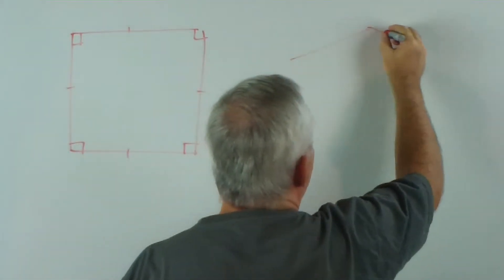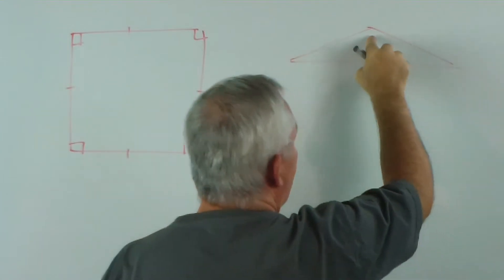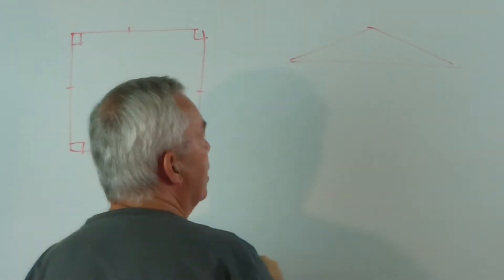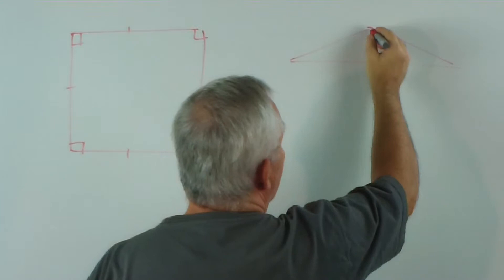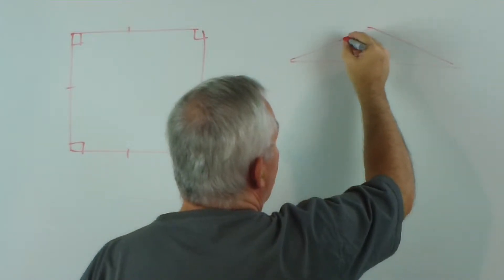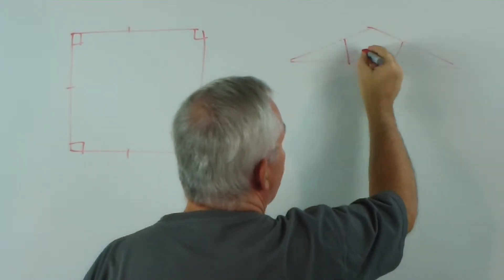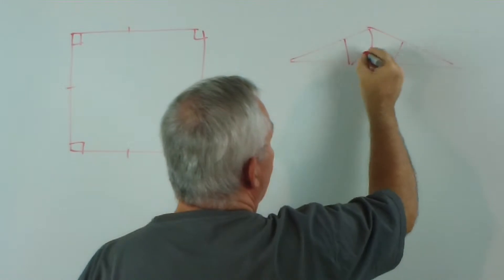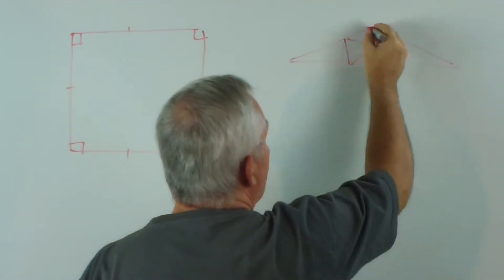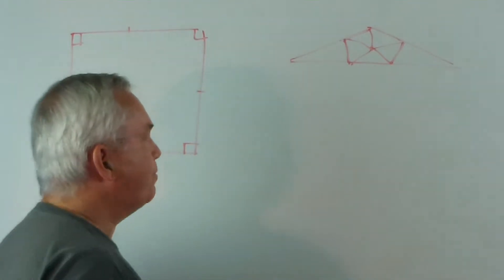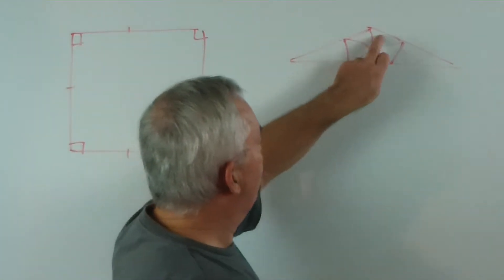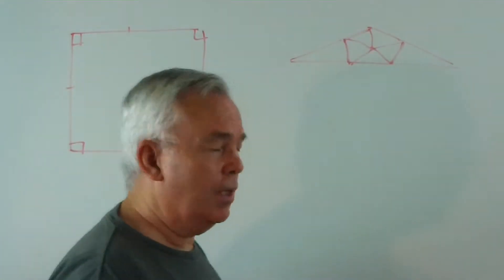Now, we had already learned how to divide an obtuse angle triangle into seven acute angle triangles by, as it were, chopping off these two sides and using a pentagon. One, two, three, four, five, six, seven, all acute angle triangles.